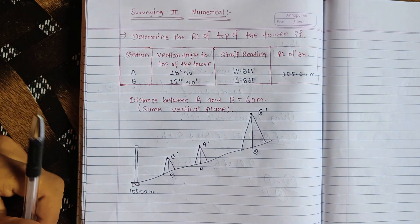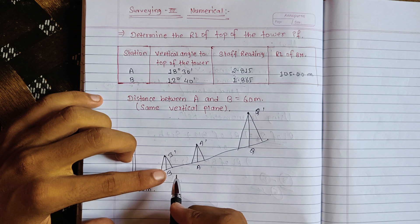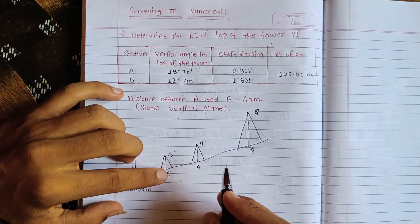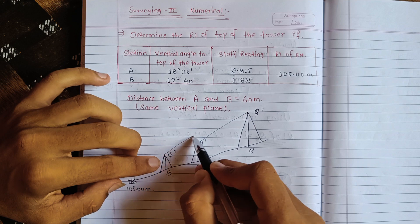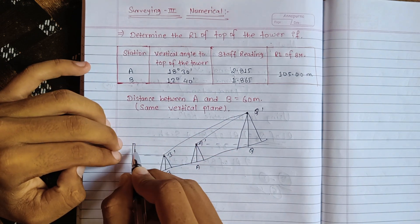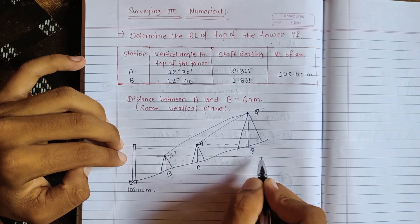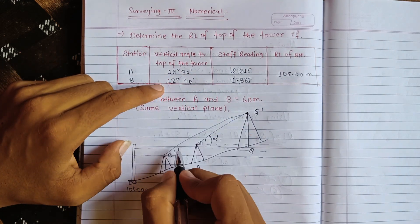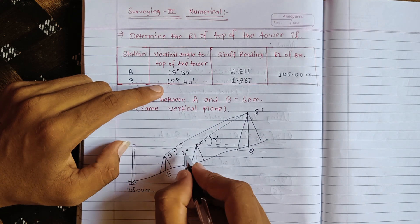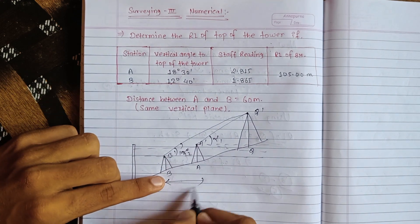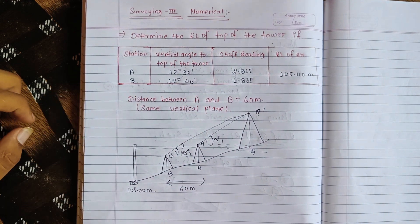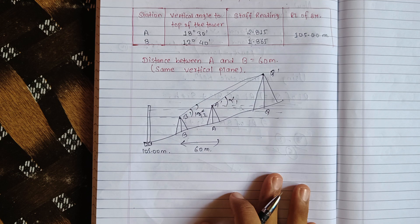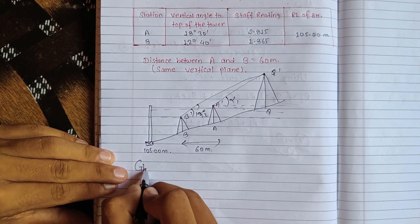So the reading at A is given. Any area can be determined. Yes, you want the distance and angle. The angle is given in degrees. Alpha 1 and Alpha 2 are given. Alpha 1 is the angle and Alpha 2 is also given. The distance is 60 meters. The vertical plane is important to understand.